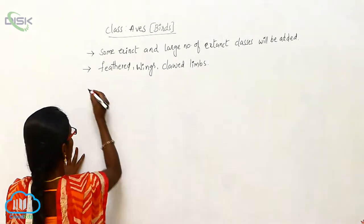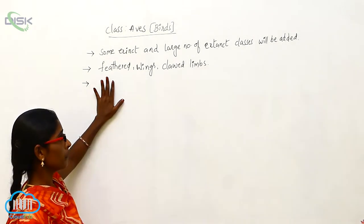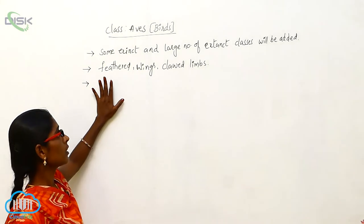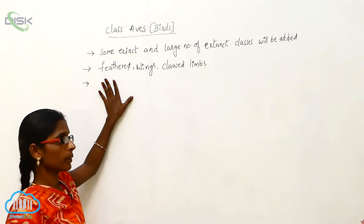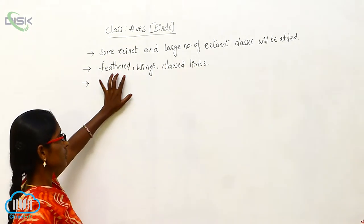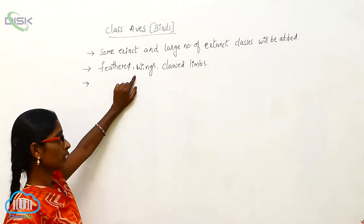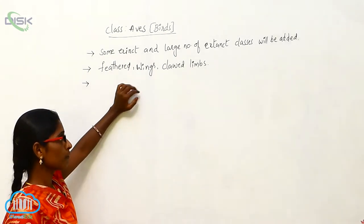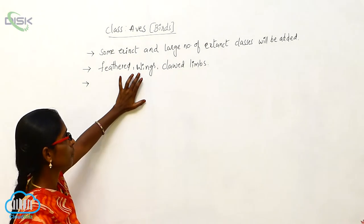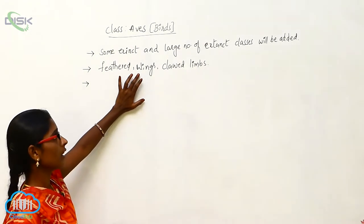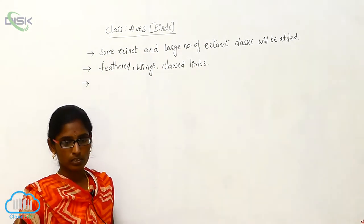Birds are adapted based on environmental conditions. The forelimbs are modified into wings, and the hindlimbs are modified into legs.